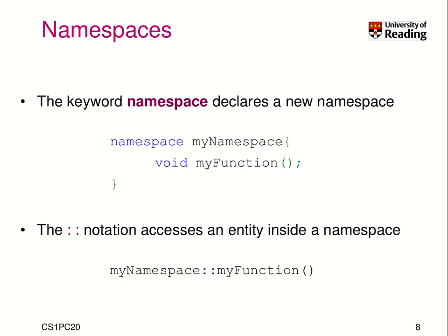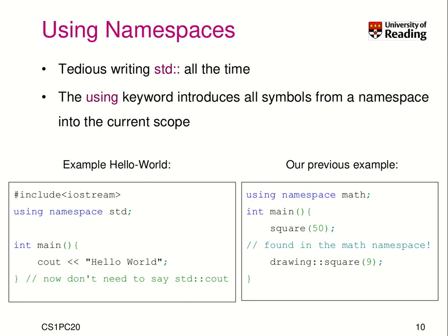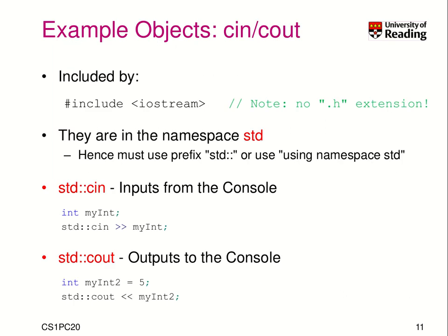It's still allowed to keep the explicit notation. So I could still write 'std::cout' in this code if I wanted to be explicit. It's just additional syntactic sugar. In our previous example with drawing and math, we could say 'using namespace math', and so when we say 'square(50)', we mean 'math::square(50)'. If we mean drawing's square, then we have to specify 'drawing::square'.